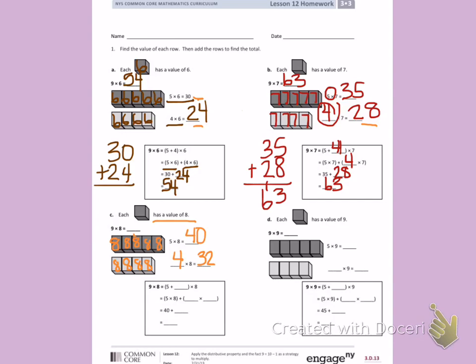Down below, again, they have broken the 9 apart into a 5 and a 4. We distribute that number sentence out. So we have 5 times 8 plus 4 times 8. 5 times 8 is 40. 4 times 8 is 32. I will add 40 plus 32 to get my answer. 40 plus 32 is 72. So, 9 times 8 is 72.